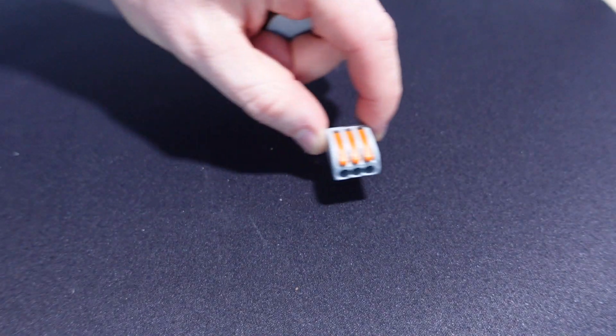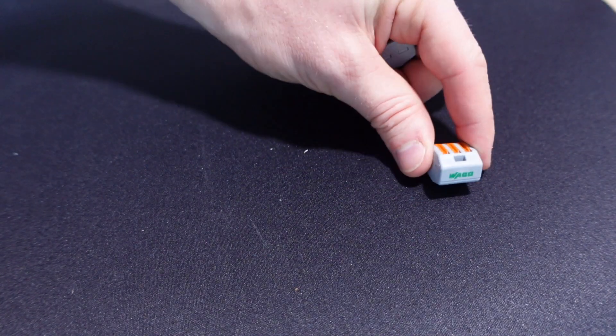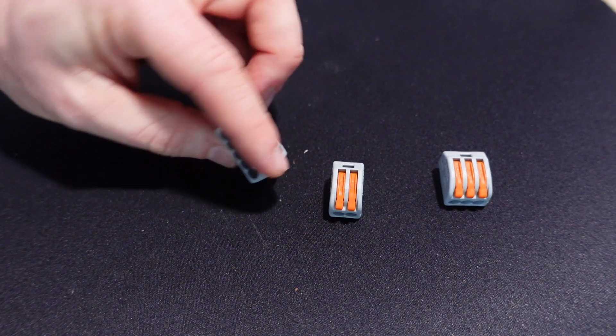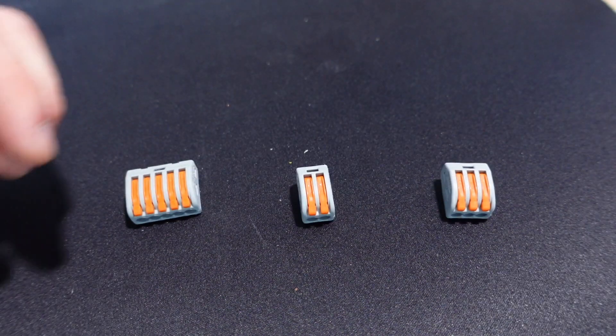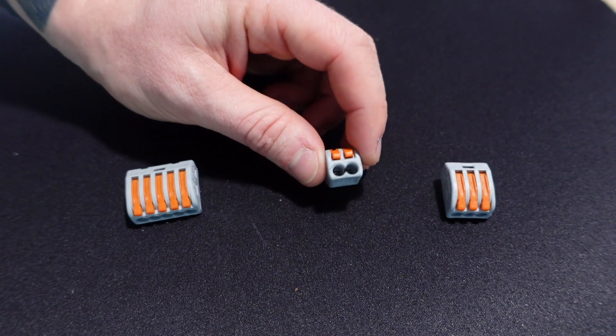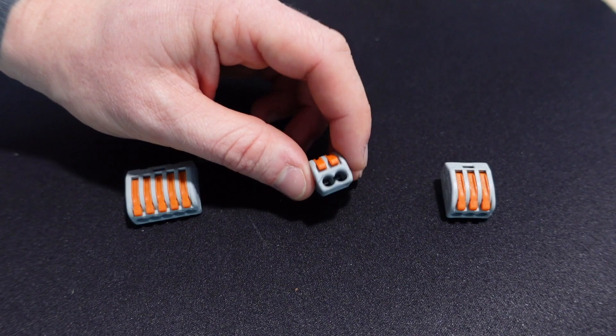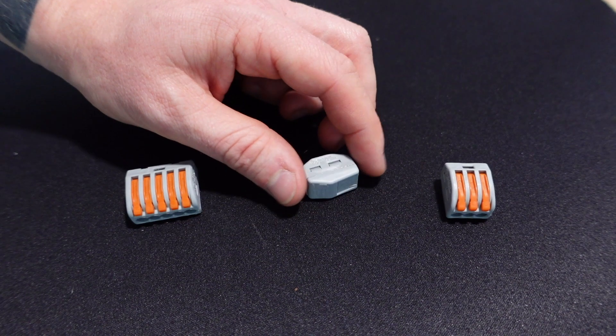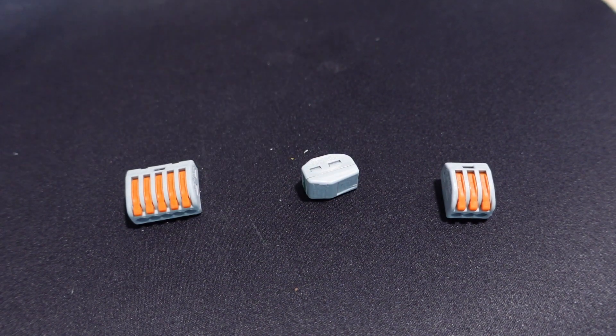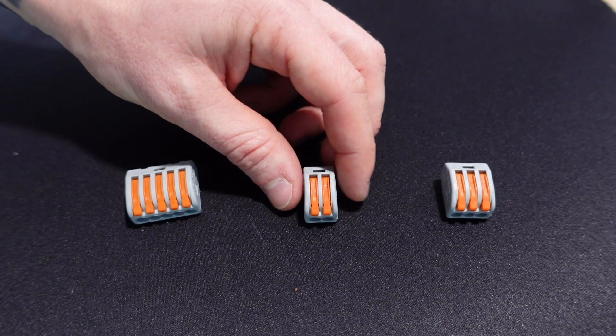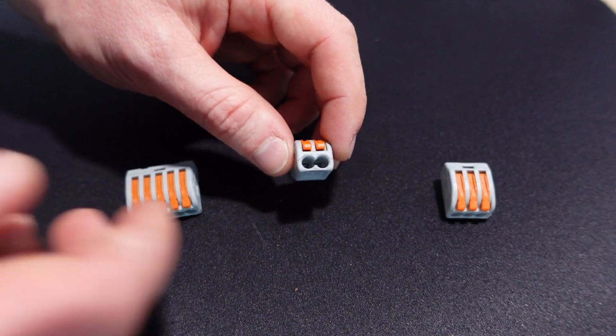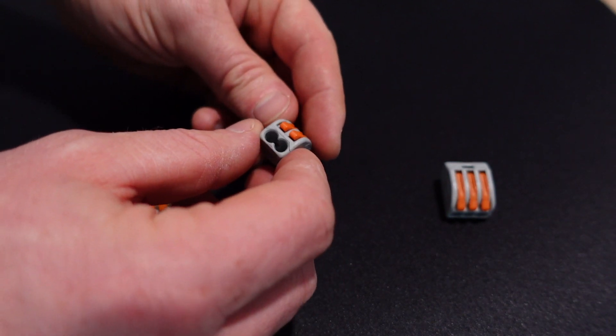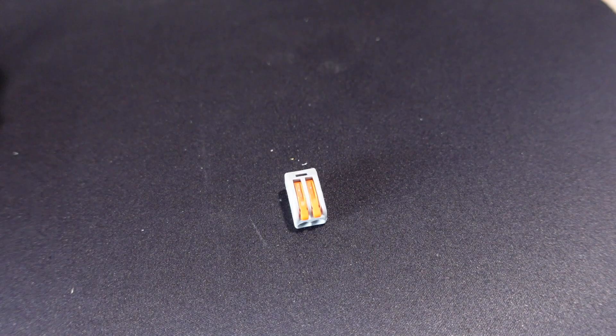So let's move on to the lever connector made by Wago. Again, they come in different sizes dependent on how many wires you want to connect together. So for the DIY, the opportunity for error is almost completely eliminated. These are the 222 versions, but you can get the 221 and they have the transparent body, just like the push fits. These ones don't have the transparent body, but they're still very, very easy to use. And you can actually get a very good feeling of whether that wire is seated properly. Let me demonstrate this for you on a wire head.